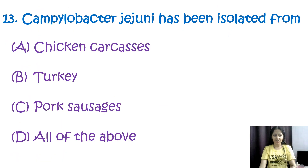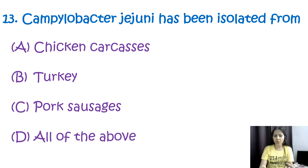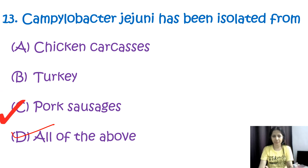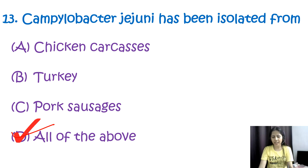Question number thirteen: Campylobacter jejuni has been isolated from — options are chicken carcasses, turkeys, pork sausages, or all of the above. Campylobacter jejuni is a bacteria commonly associated with poultry, turkeys, and meat sausages like pork sausages. The correct option is D, all of the above. Consumption of undercooked or contaminated poultry can cause infections in the human body.